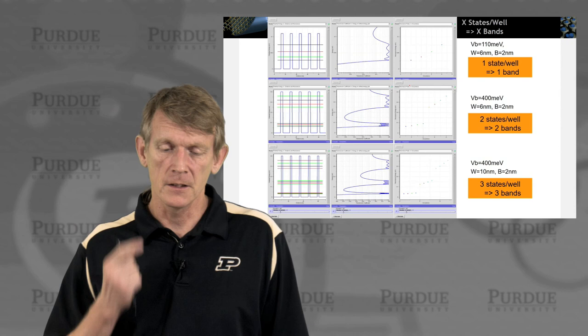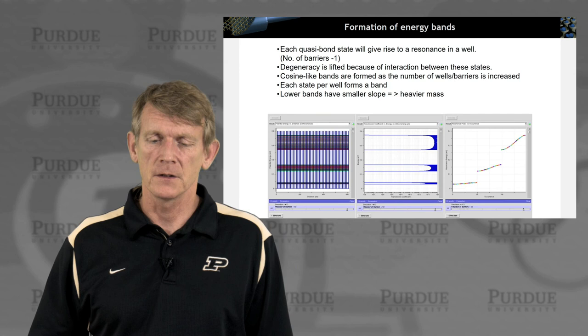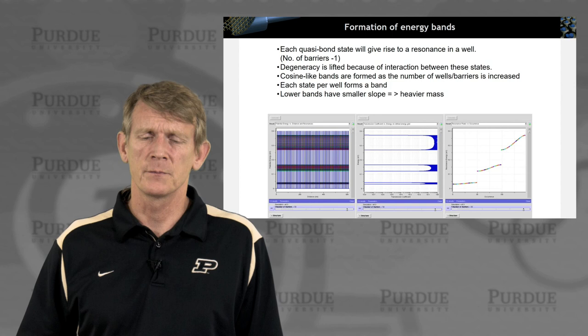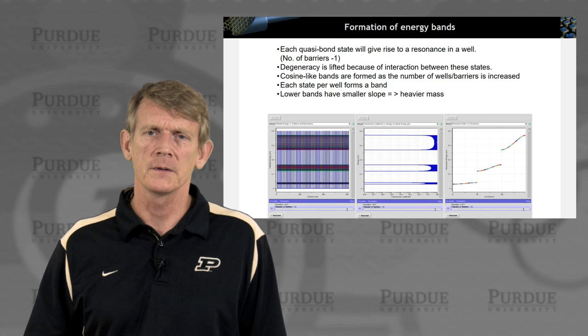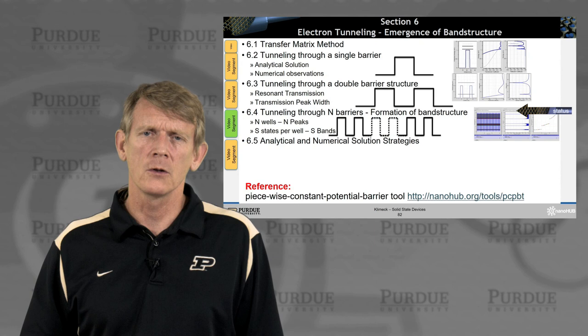The summative slide: each quasi-bound state gives rise to a resonance in a well, the degeneracy between states is lifted through interaction, and a cosine-like dispersion of bands forms. Each state per well contributes to a band, and lower bands have a smaller slope — ultimately leading to a heavier effective mass. That concludes the numerical experiment with N-barriers; the next segment will look at solution strategies for structures like these. Thank you.